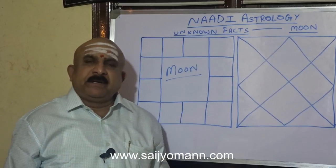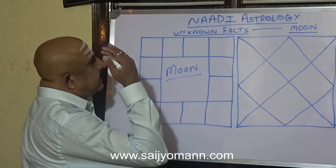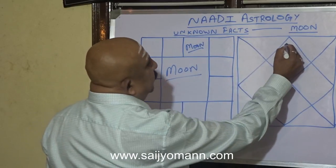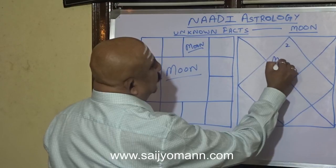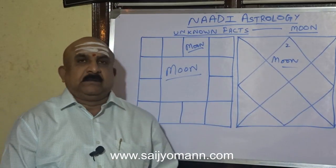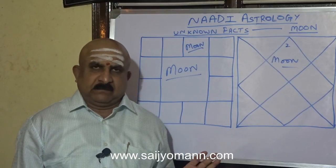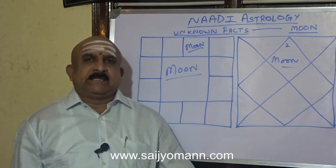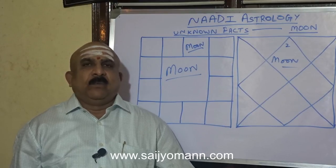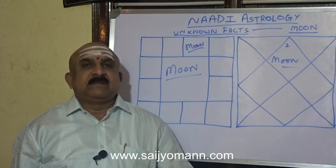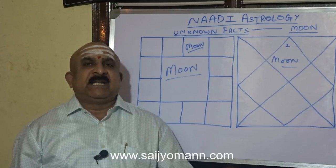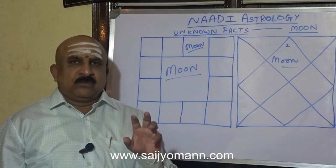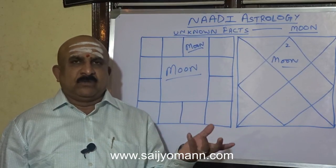Let us begin. For example, we will place Moon in Taurus. When Moon is placed in any sign, according to the sign's significations — the rasi's significations — the mother will have those qualities. Moon in different rasis gives a quality to the mother of the native.